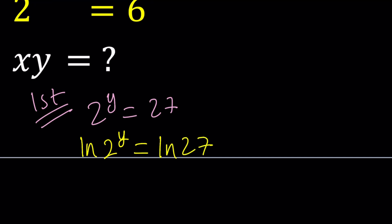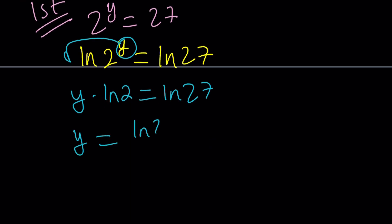ln 2 to the Y equals ln 27. And then we're going to bring the Y down, leaving us with Y times ln 2 equals ln 27. And from here we get Y equals ln 27 over ln 2.